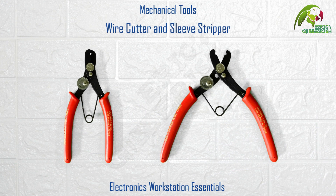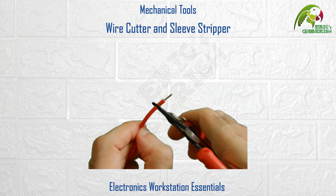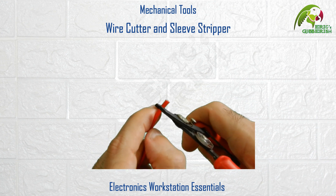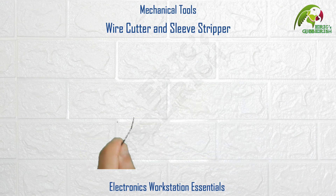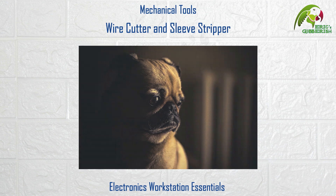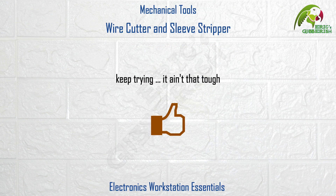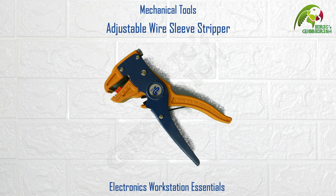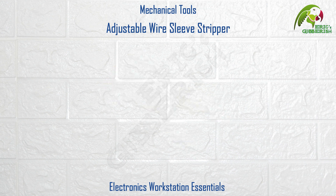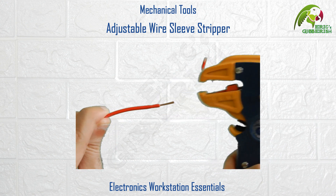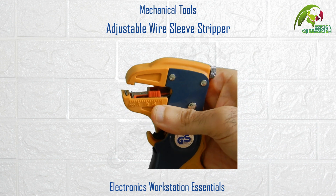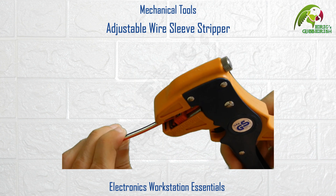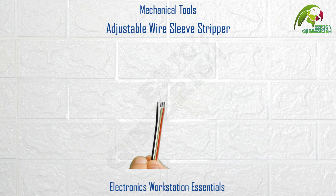Wire cutter and sleeve stripper. A very useful tool mainly for cutting cables and wires and for removing or stripping off the sleeves of the ends of cables and wires. It takes a bit of experience to master the use of this tool as a sleeve stripper, so don't get disappointed when using it for the first few times. Adjustable wire sleeve stripper — a more sophisticated tool to remove or strip off the sleeves off the ends of cables and wires. It comes with an adjustable length marker to set the length of sleeve to be stripped, and you can strip the sleeves of multiple wires simultaneously.